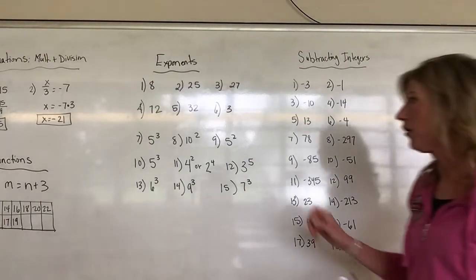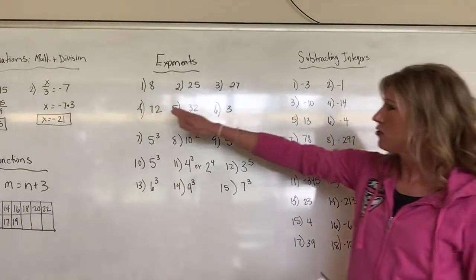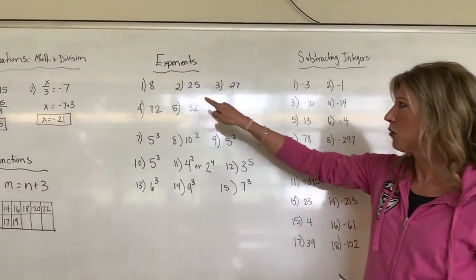Here are your answers, just going across: number 1 you should have 8, number 2 is 25, number 3 is 27, number 4 is 72, number 5 is 32, number 6 is 3.